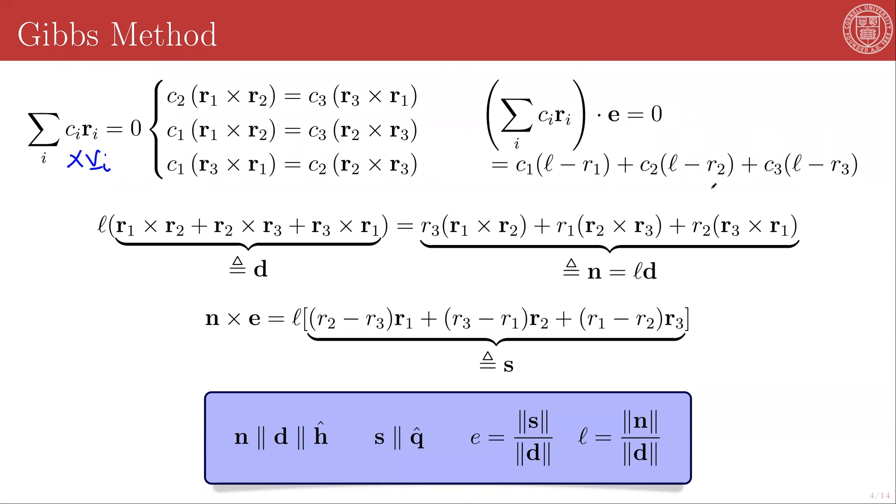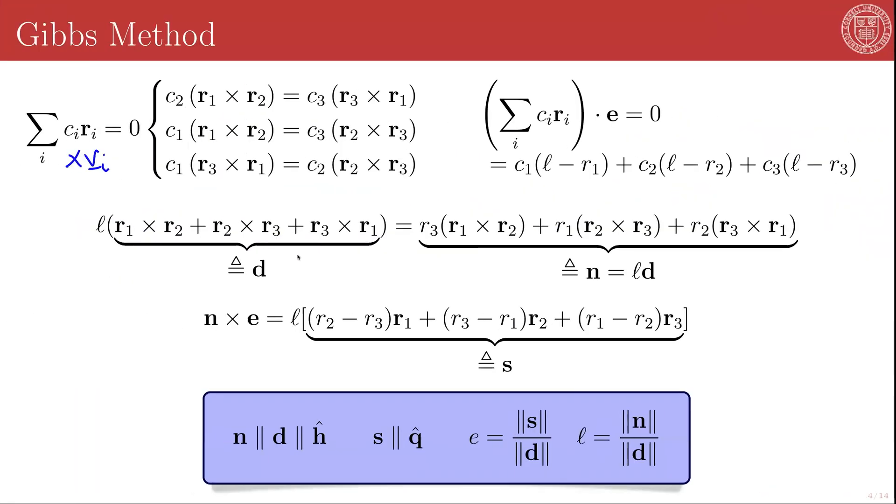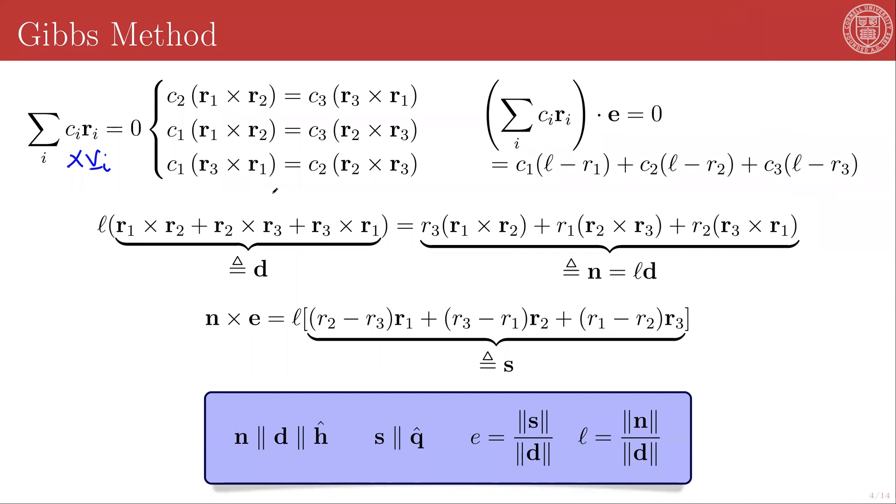We can now pre-multiply this expression by the cross product R3 cross R1 and substitute this set of expressions in order to eliminate terms. So we've taken our linear combination of the weighted sum of our radius vectors dotted into E, we've pre-multiplied this by R3 cross R1, and now for each of these R3 cross R1 terms, we can substitute using our previously found expressions. So for example, in one case, we can take R3 cross R1 is equal to C2 divided by C1 times R2 cross R3. Similarly, we have R3 cross R1 is equal to C2 divided by C3 times R1 cross R2. So let's make those substitutions.